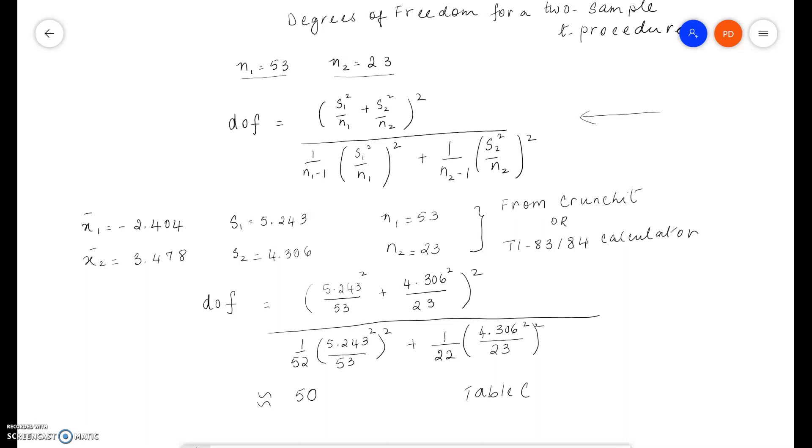If the data are given in the question, either use Crunch-it or use your TI-83 or 84 calculator, because here the sample size is 53 and the TI-30x2s cannot handle more than about 30 sample size, so I don't think it can handle the calculations.